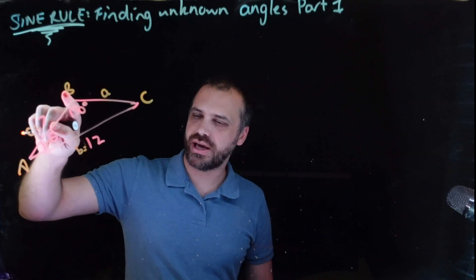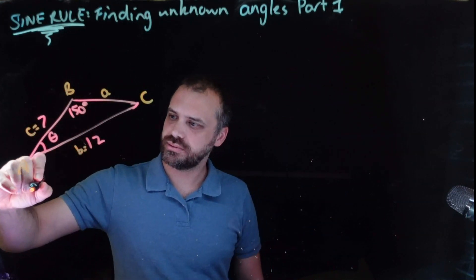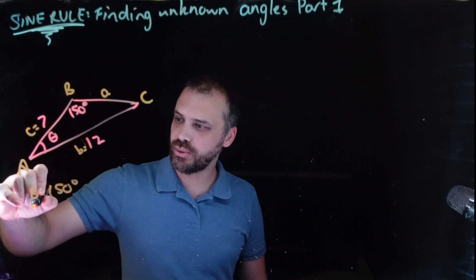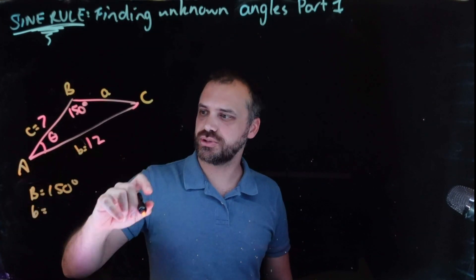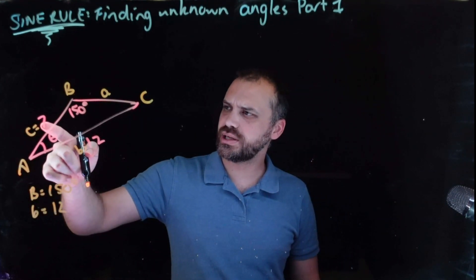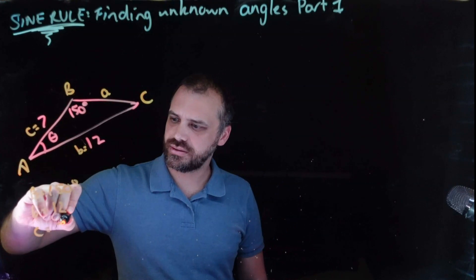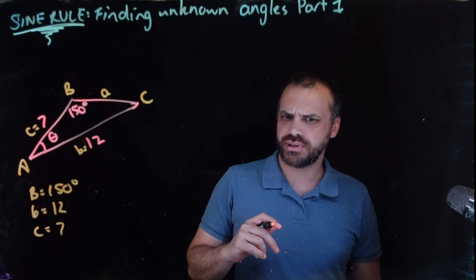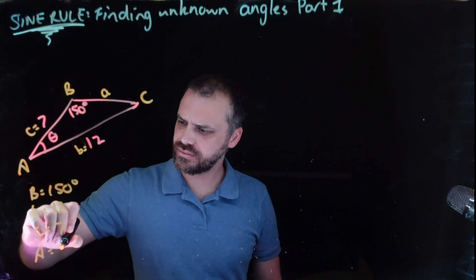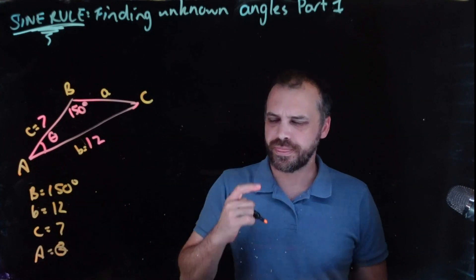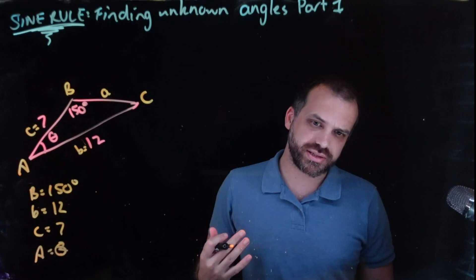We know that the capital B is equal to 150 degrees. We know that the lowercase b is equal to 12. And we know that the lowercase c is equal to 7. Wait a minute. And we want to know A. That's the thing that we don't know. That's going to be theta.